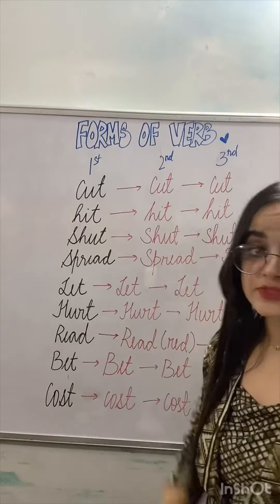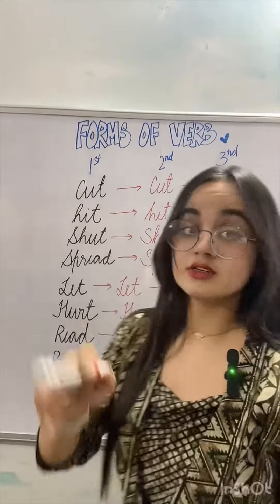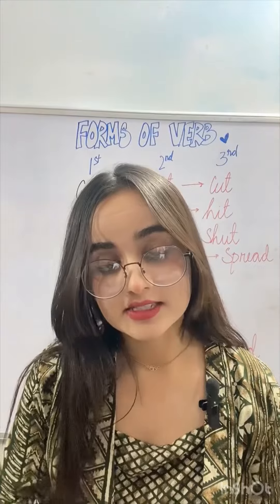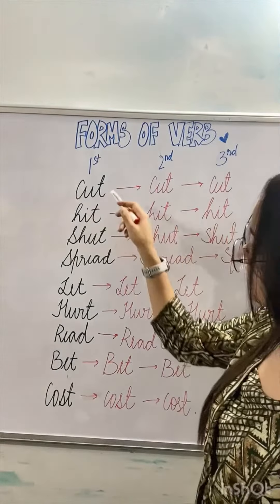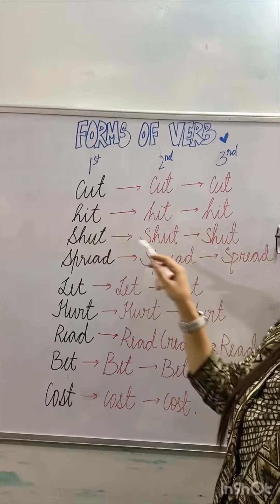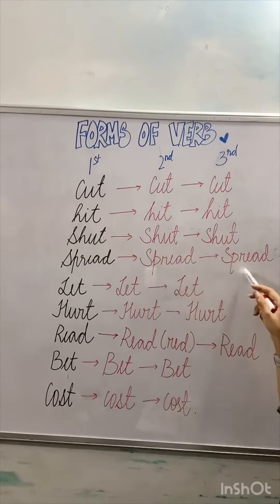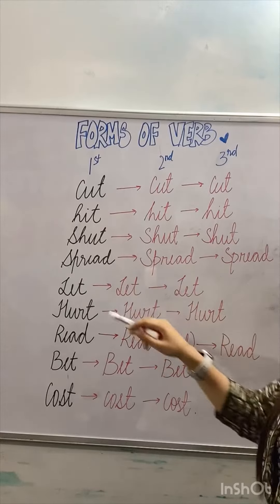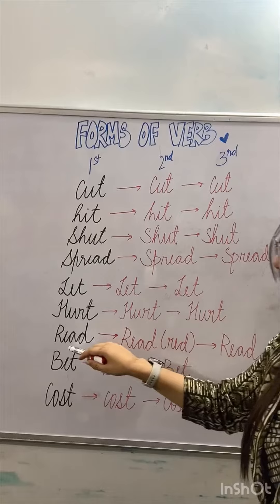For example: cut, cut, cut — not 'cutted', which is wrong. Same way: hit, hit, hit; shut, shut, shut; spread, spread, spread; let, let, let; hurt, hurt, hurt. These verbs keep the same form in all three — present, past, and past participle.